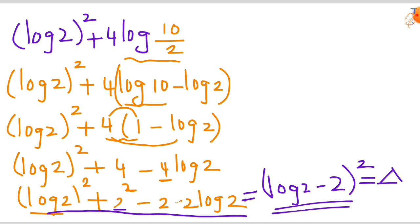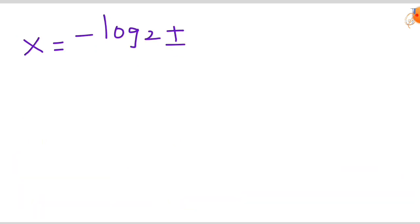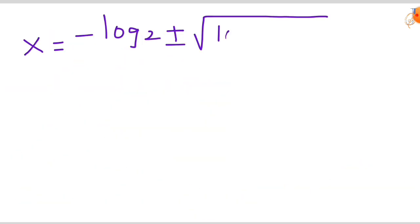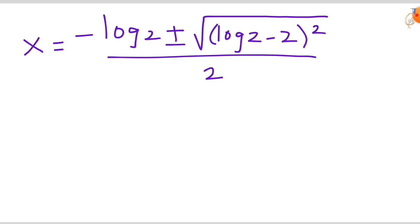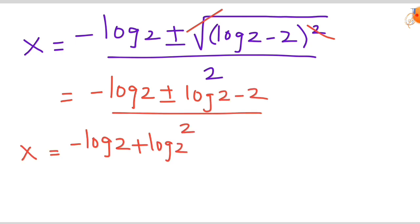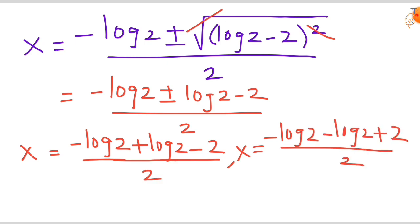Now substituting this discriminant value back into the quadratic formula: x = (−log 2 ± √((log 2 − 2)²)) / 2. We can cancel the square and the square root, leaving x = (−log 2 ± (log 2 − 2)) / 2. So our two x values come from using plus and minus.